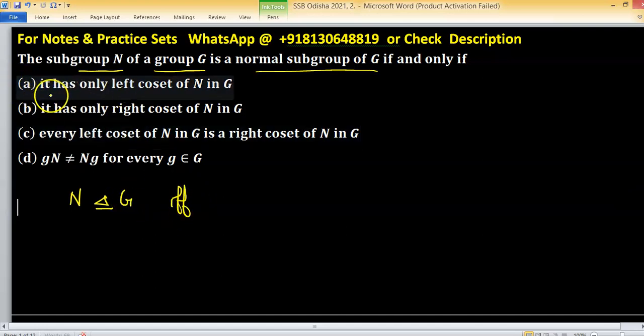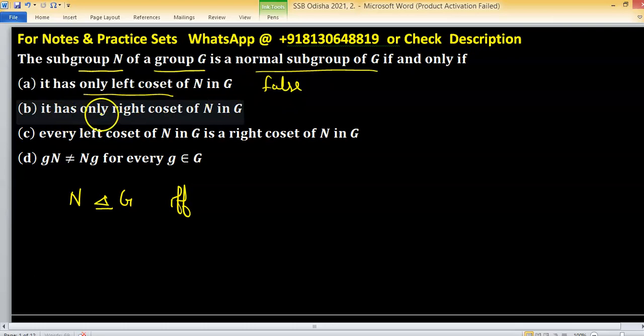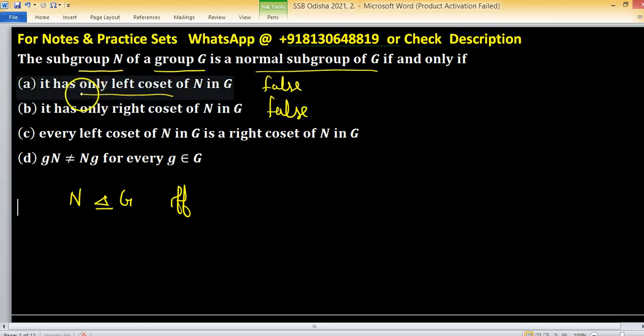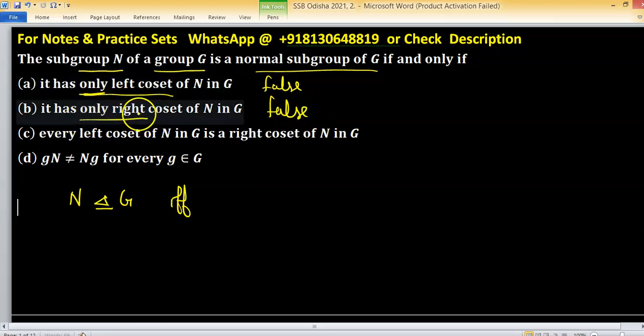So in option a, it has only left coset of n in g. This statement is false. Option b, it has only right coset of n in g. This is again false because of only. Only left and only right.